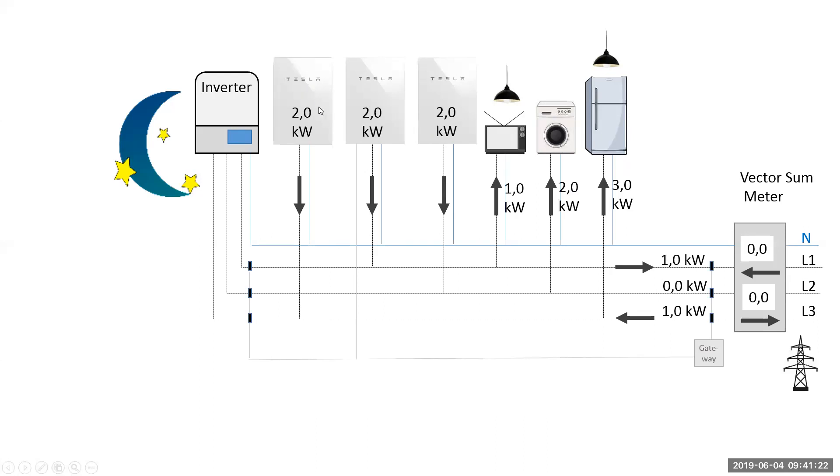Each of the batteries would be exporting two kilowatts to match the home load. In this case, it would mean one kilowatt is going out on L1 and one kilowatt is coming in on L3, but the vector sum meter will be zero.